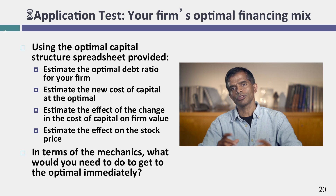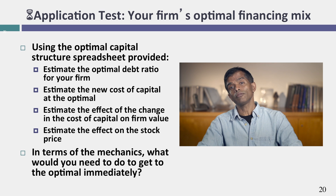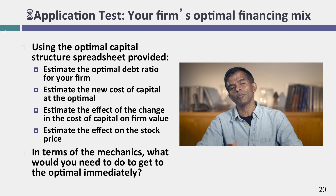When you get a chance, take your company through this process: compute the optimal debt ratio using the cost of capital approach, look at what will happen to your value if you move to the optimal, ask the what-if questions about operating income drops, and assess whether your company should move to the optimal. That is a good starting point for assessing the financing mix for a company.